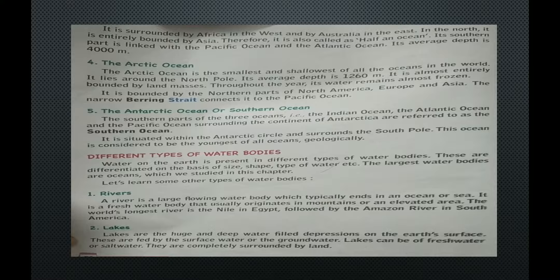The Arctic Ocean is the smallest and shallowest of all the oceans in the world. It lies around the North Pole with an average depth of 1,260 meters. It is almost entirely bounded by land masses, and throughout the year its water remains almost frozen. It is bounded by the northern parts of North America, Europe and Asia. The narrow Bering Strait connects it to the Pacific Ocean.